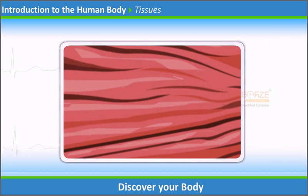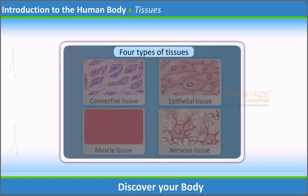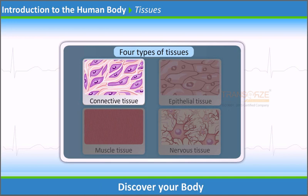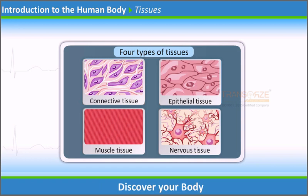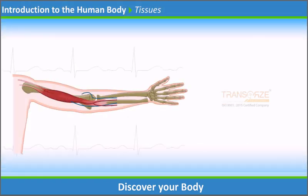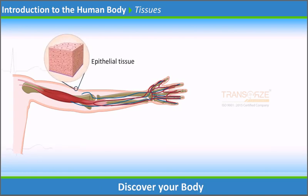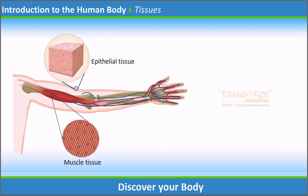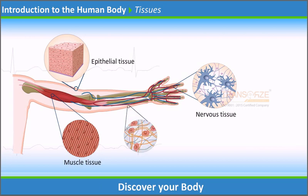Tissues are organizations of many similar cells with varying amounts and kinds of non-living intercellular substance between them. There are four types of tissues: connective tissue, epithelial tissue, muscle tissue, and nervous tissue. The hand is a beautiful example of a structure that has all tissue types: epithelial tissue on the surface of the skin, muscle tissue in the muscular region, nervous tissue in the nerves, and connective tissues under the skin.